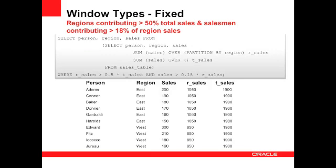So using the different sales totals, we can now easily search for regions that are contributing more than 50% of total sales and where salespeople are contributing more than 18% of regional sales. And to do that, we just add our WHERE clause and filter the result set. So the first step is to find the rows contributing more than 50% of total sales.